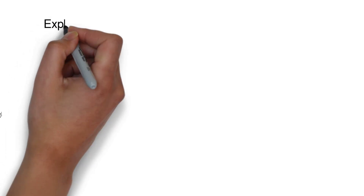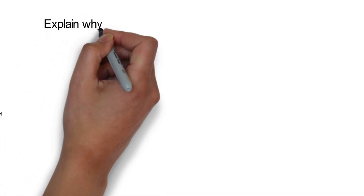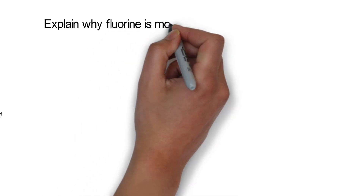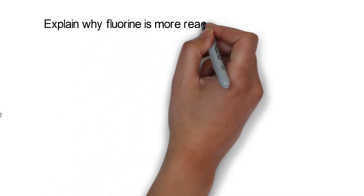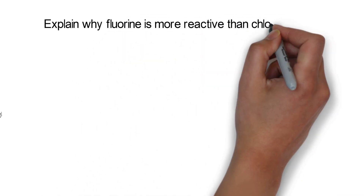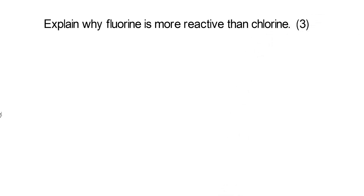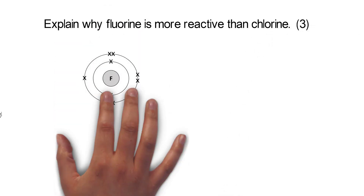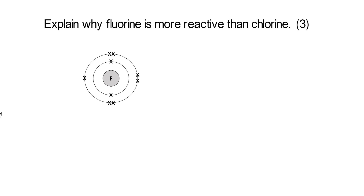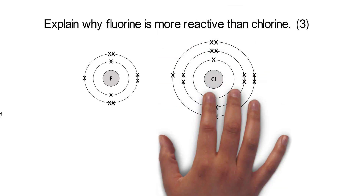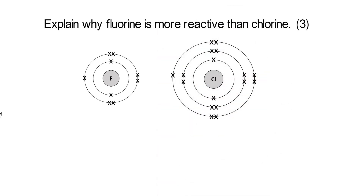We'll go back to group 7 now. We're going to think about why fluorine is more reactive than chlorine. Both are in group 7 — they both want to gain an electron to get a full outer shell of eight. Pause the video to see if you can figure out why fluorine is more reactive.